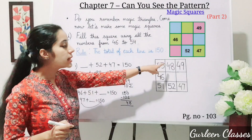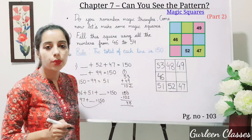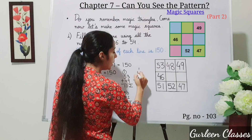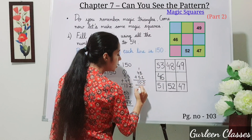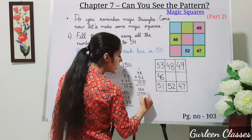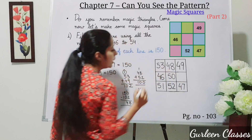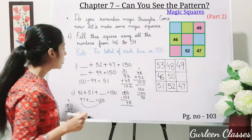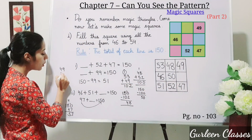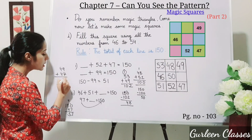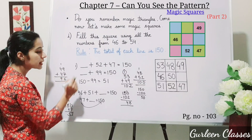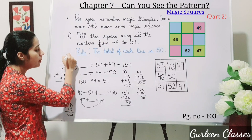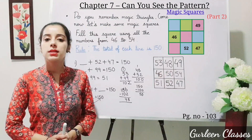Now let us take the second column. 48 plus 52 is 100, so 150 minus 100 equals 50. We write 50 here. Now for the third column: 49 plus 47 is 96, so 150 minus 96 equals 54. We write 54 here.